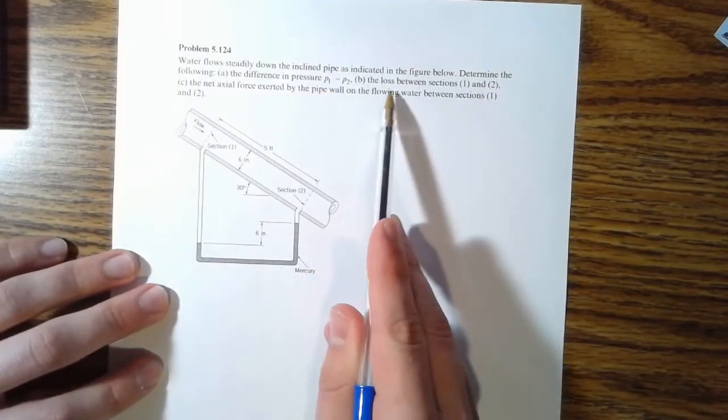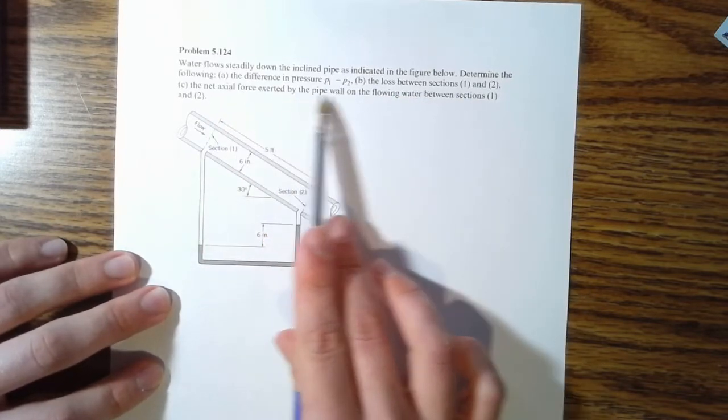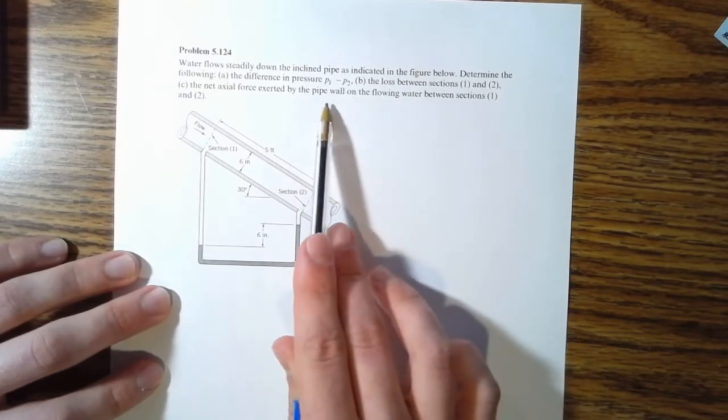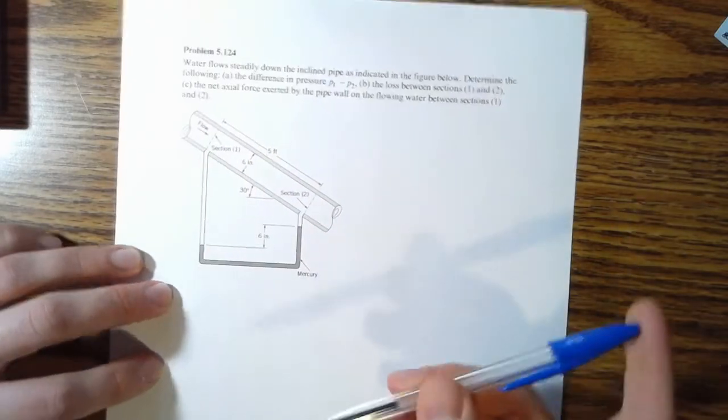The pressure difference lost between sections one and two and the net axial force exerted by the pipe wall on the flowing water between sections one and two.